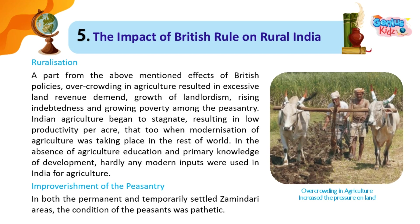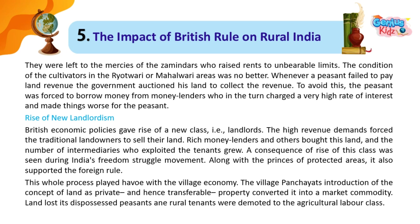Impoverishment of the Peasantry: In both the permanently and temporarily settled zamindari areas, the condition of the peasants was pathetic. They were left to the mercies of the zamindars who raised rents to unbearable limits. The condition of cultivators in the Ryotwari or Mahalwari areas was no better. Whenever a peasant failed to pay land revenue, the government auctioned his land. To avoid this, the peasant was forced to borrow money from moneylenders who charged very high rates of interest, making things worse.